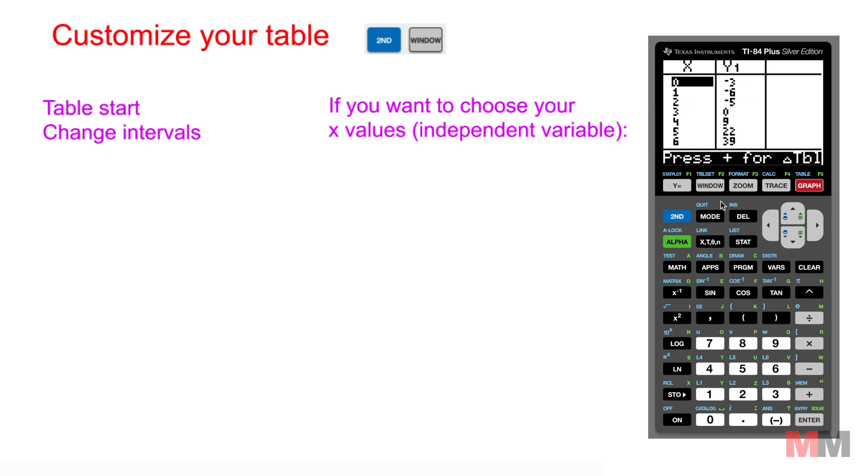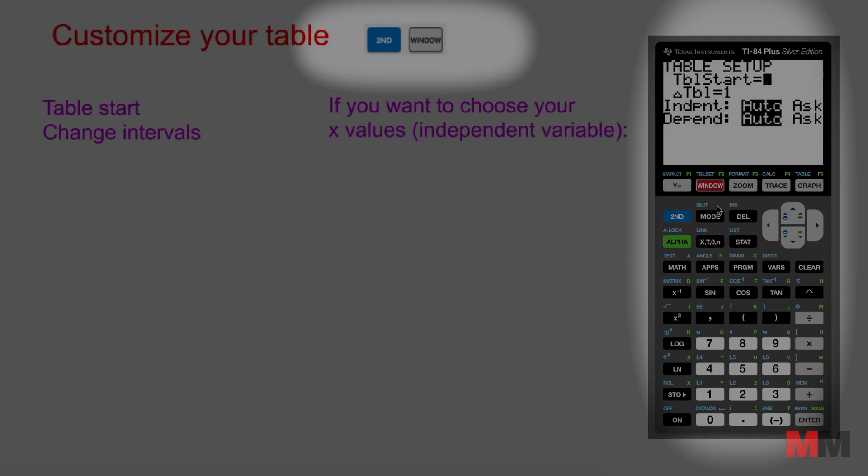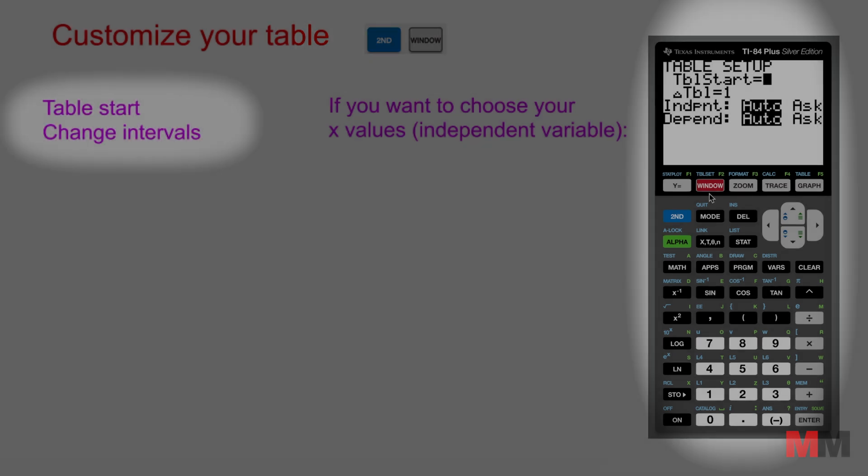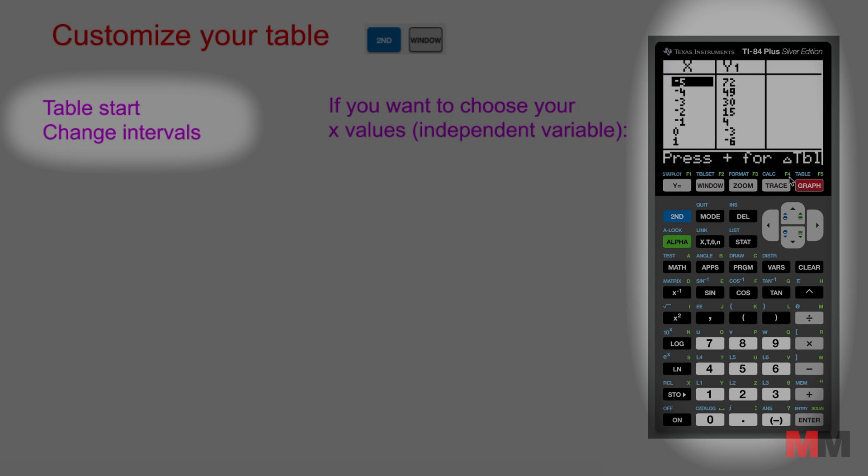If you want to change some options just press 2nd window and I'm going to talk about three options that you can use right here. First one is table start. That is just saying that if I want my table to start at a different number I just have to change this 0 right here. Let's change it to negative 5 and see what that does. Go back to 2nd graph to access our table and as you can see it used to start at 0 and now it starts at negative 5, so that's pretty useful.